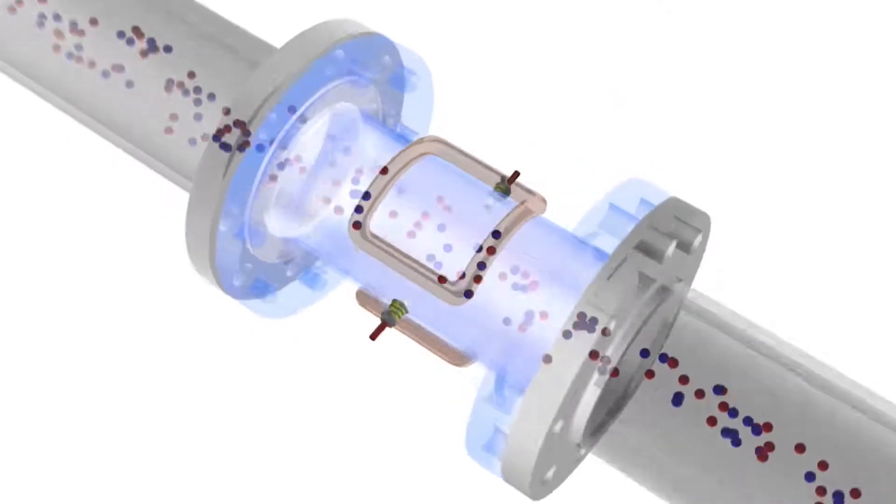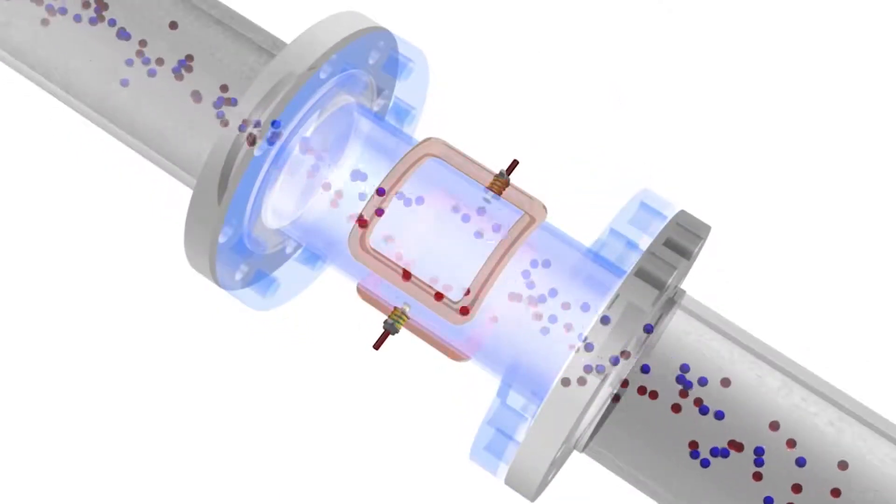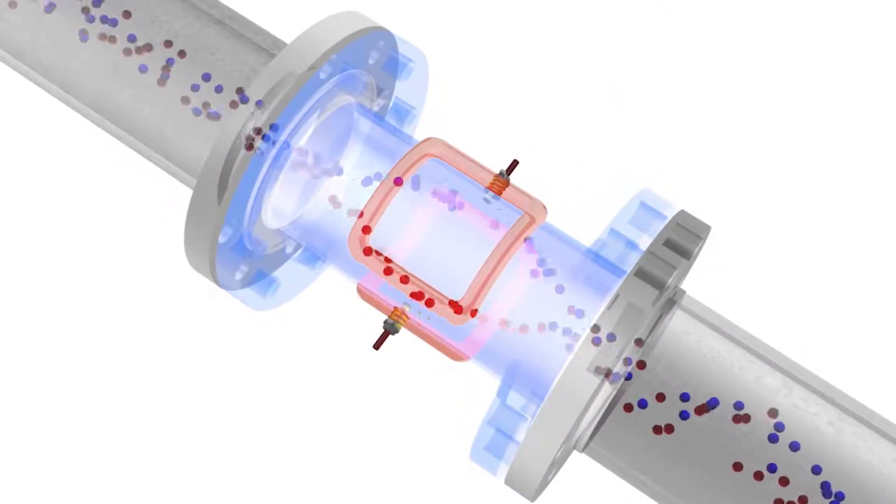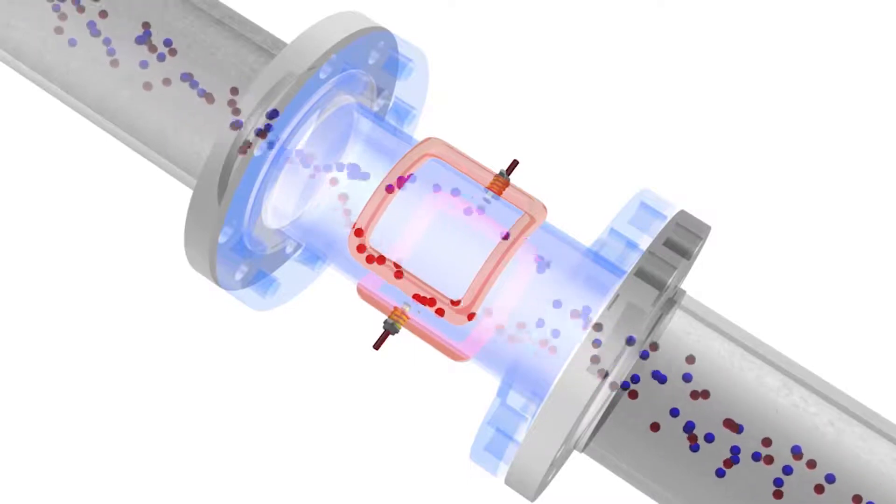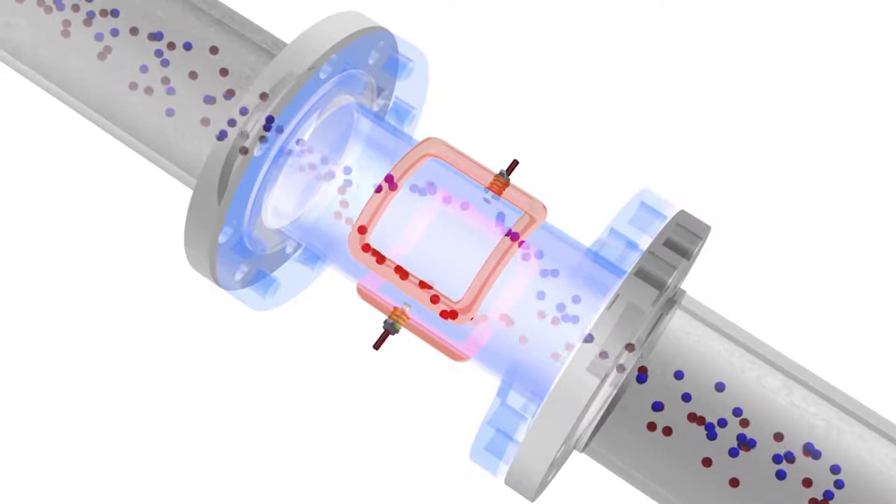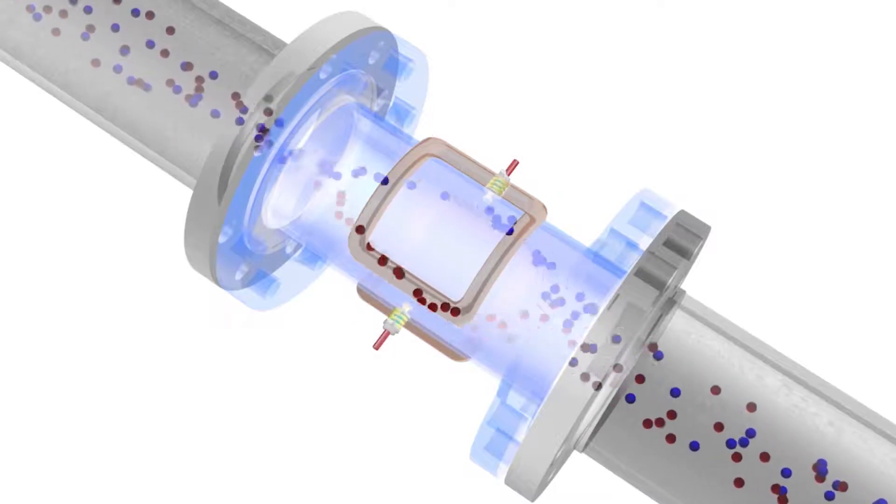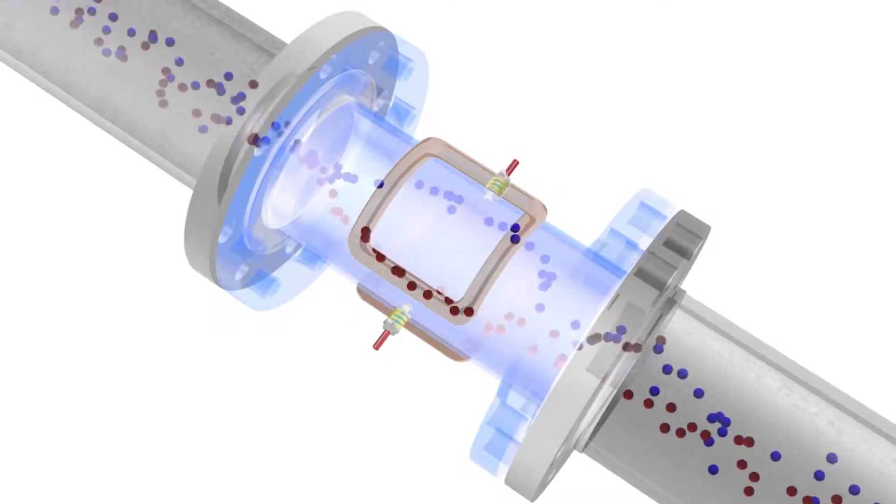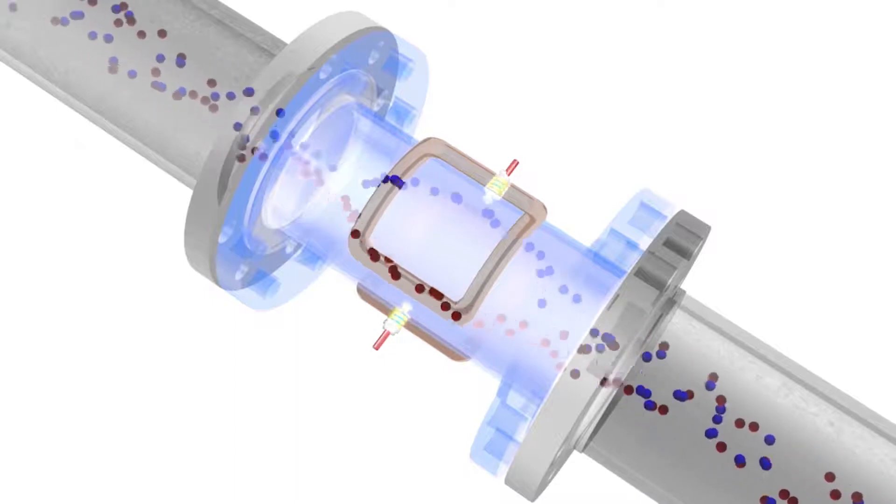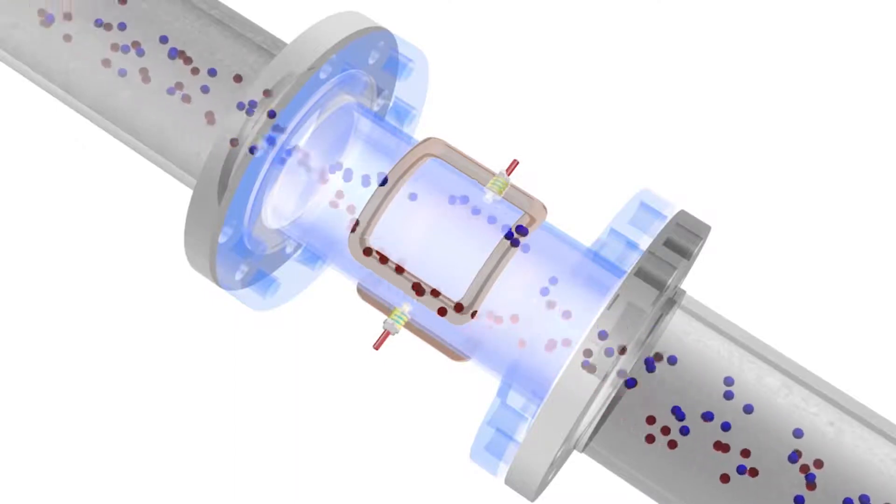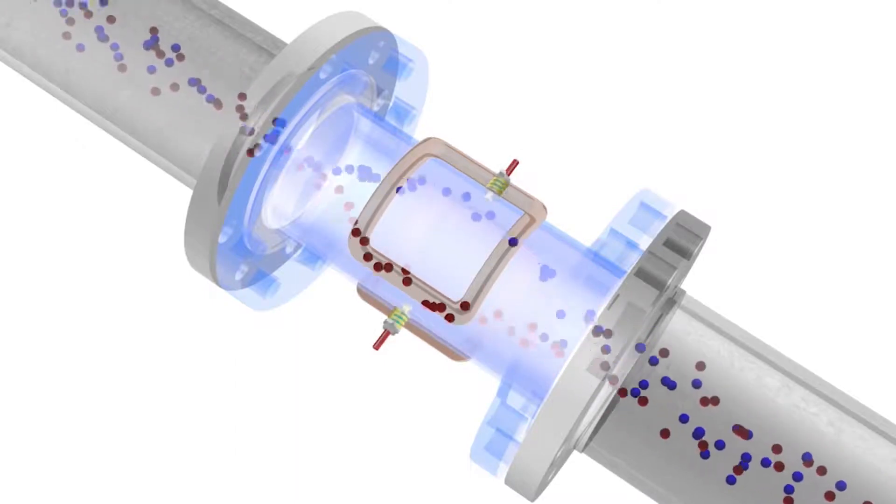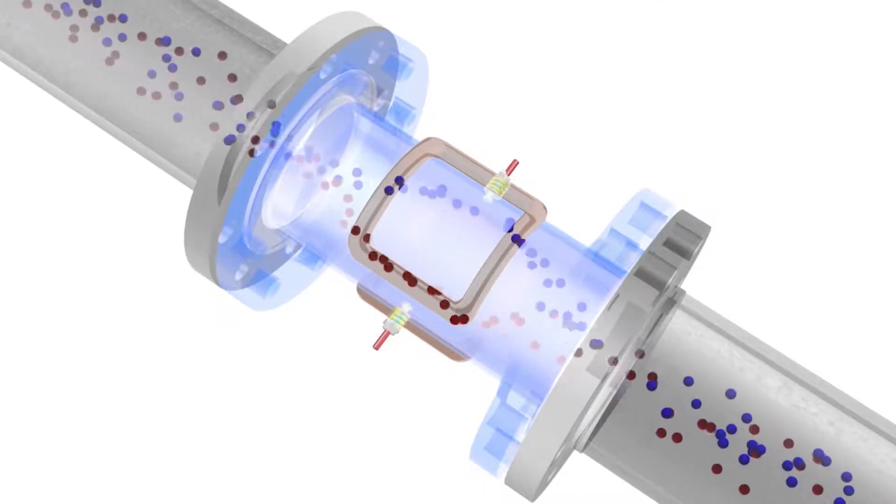Once the pipe is full and the fluid begins to flow, the force of the magnetic field causes the negatively and positively charged particles of the fluid to separate as they pass through the magnetic field. This separation causes an induced voltage to be formed between the electrodes in the sensor. The conductivity or charge of the fluid in the pipe must be at a certain level for the transmitter to measure the induced voltage at the electrodes.